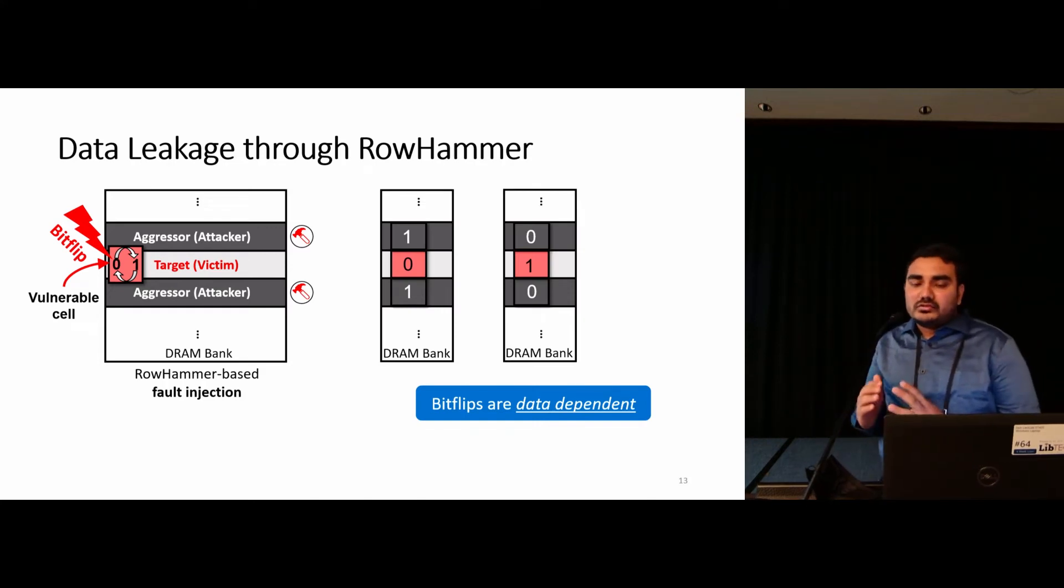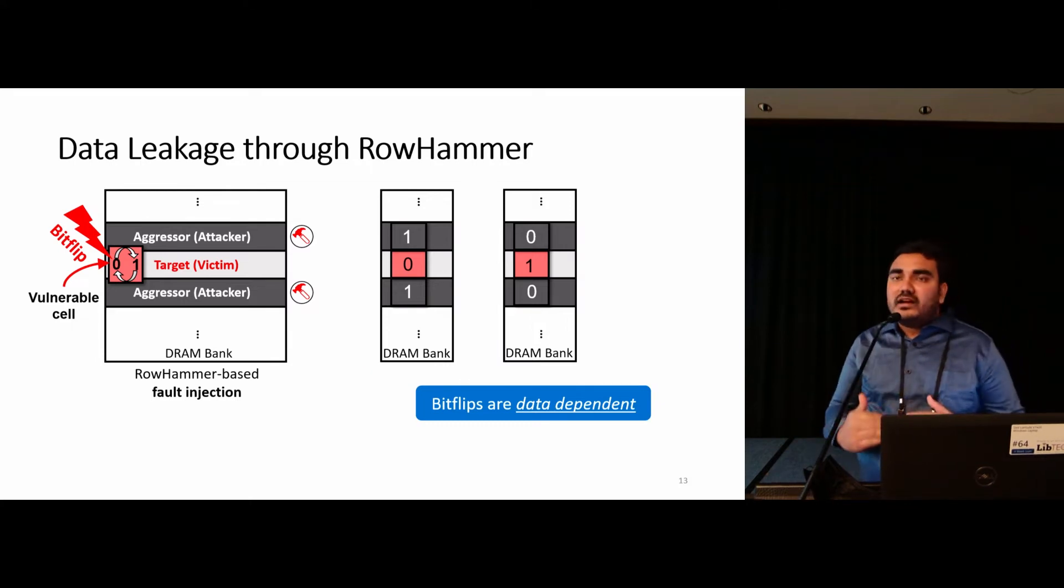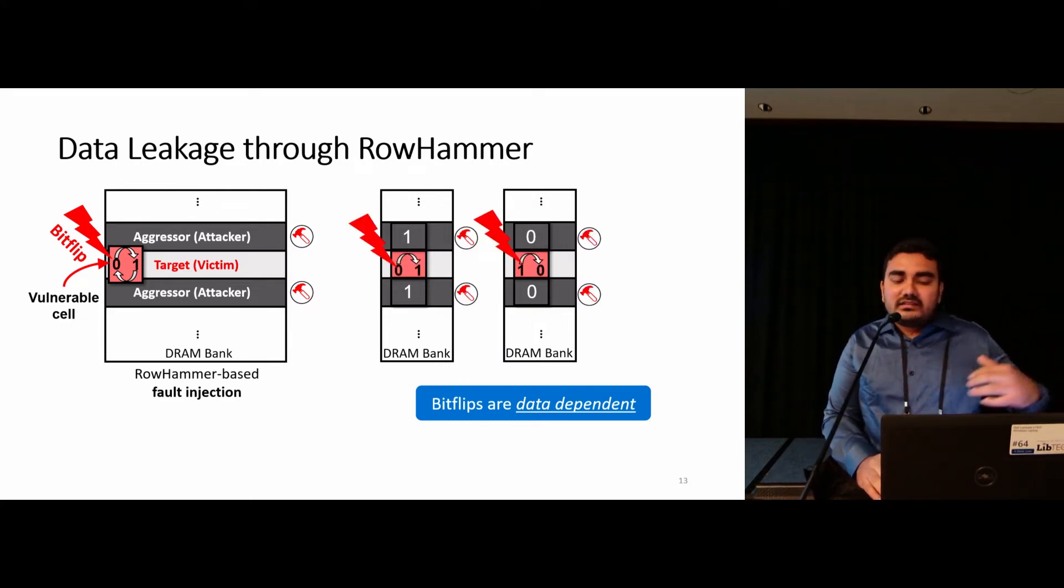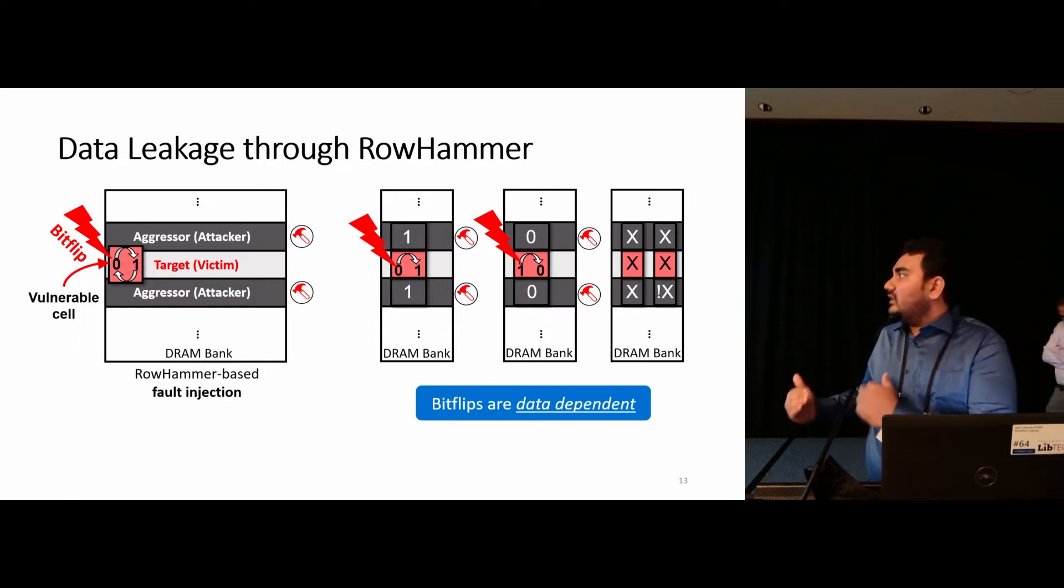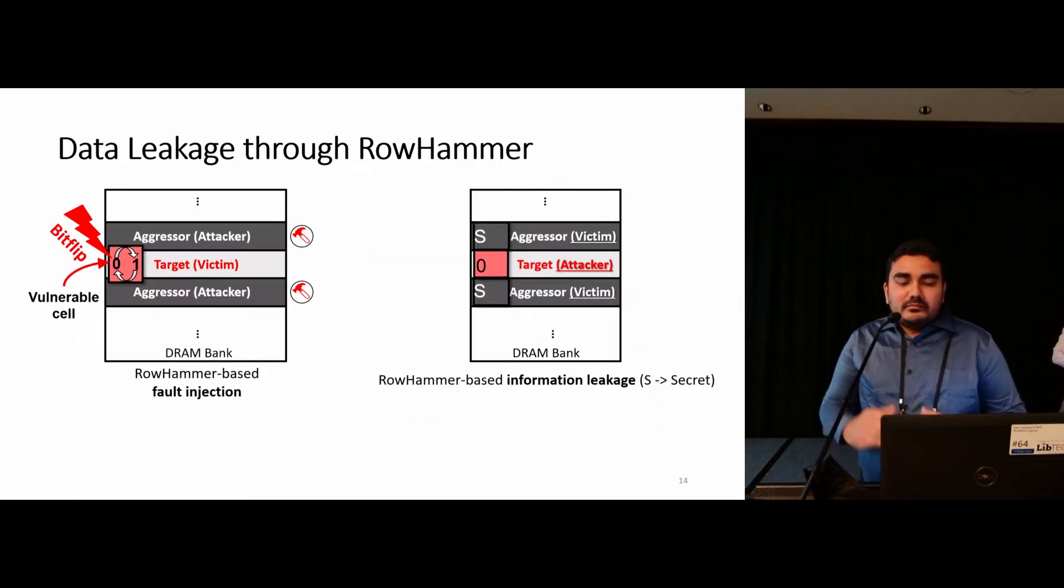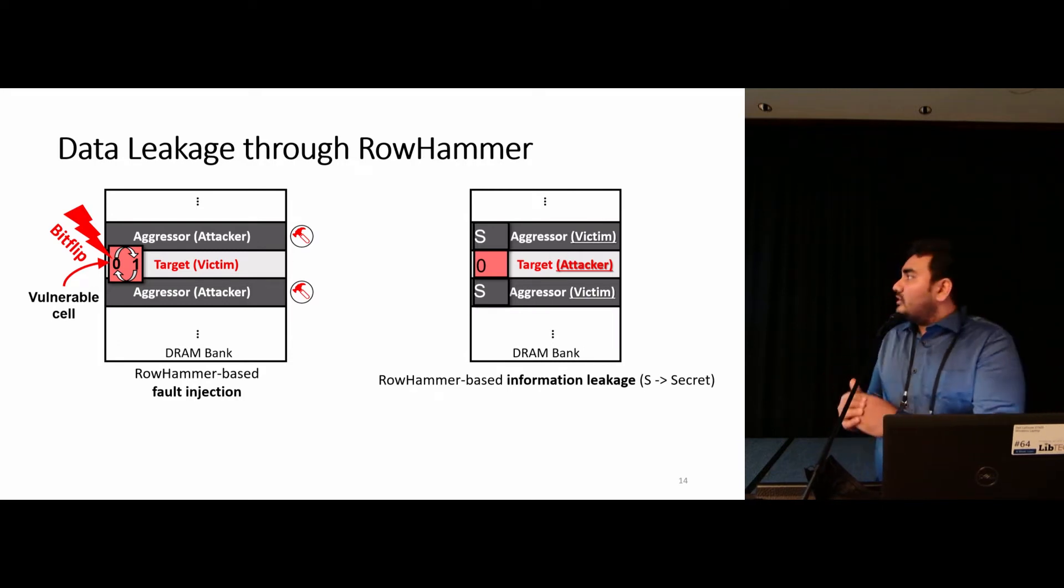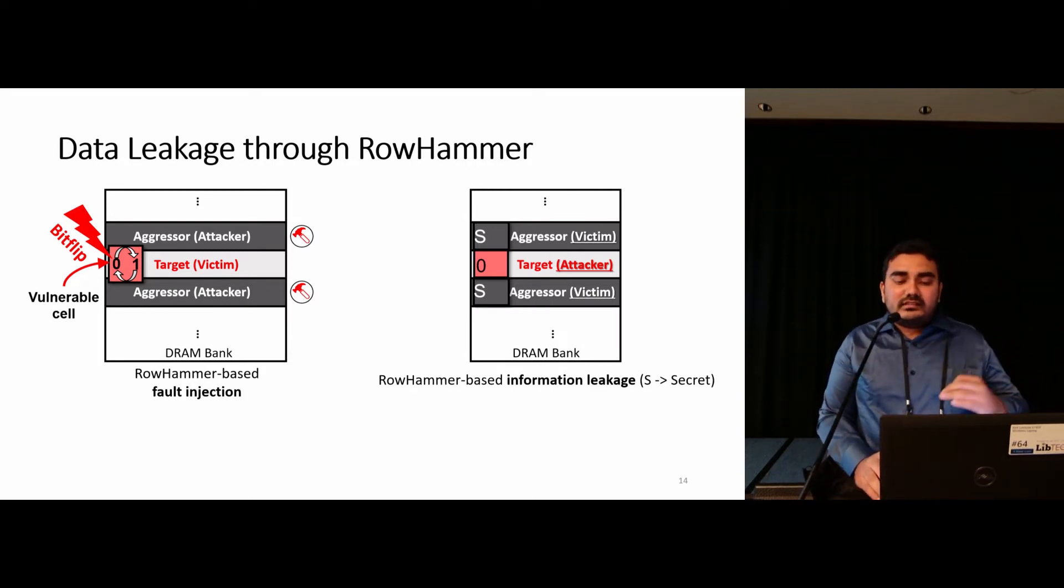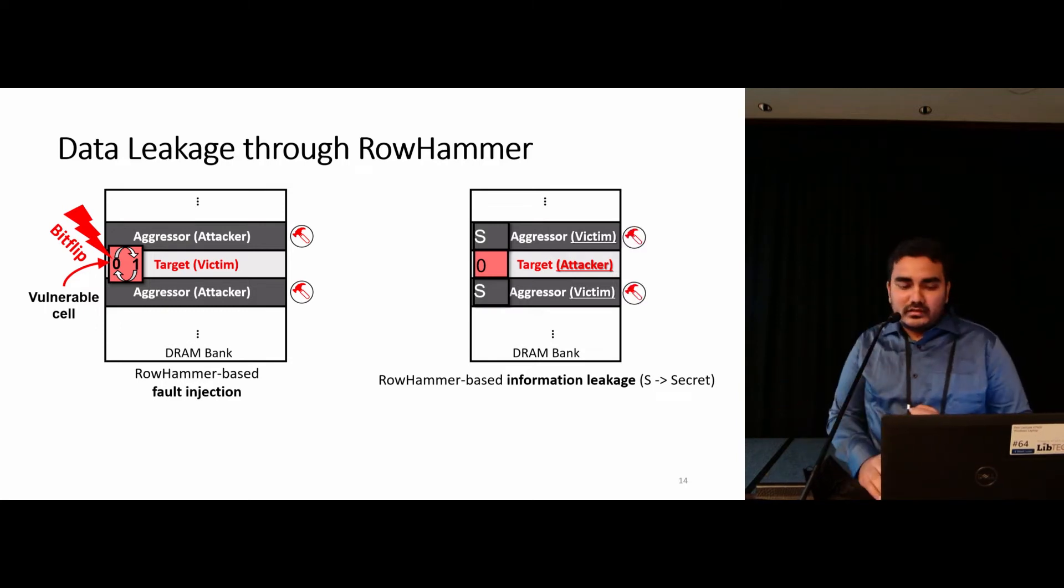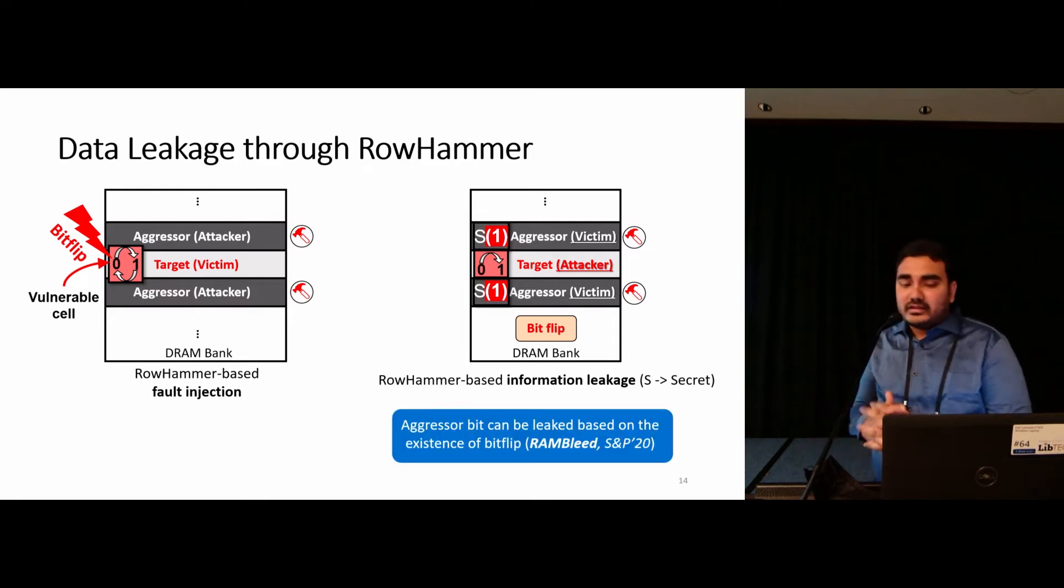One important property of this is that the bit flips are data-dependent. Specifically, if the bits stored in the two aggressor rows are the opposite of the bits in the vulnerable cell, we see very high probability of bit flips. For other data patterns, bit flips are highly unlikely. Based on these characteristics, we can potentially steal victim secret bits instead of faulting them just by placing them into the aggressor row. Then, by observing bit flips in the attacker's data in the target row, the victim data can be leaked. This changes the rowhammer-based attack vector from fault injection vector to data stealing vector.